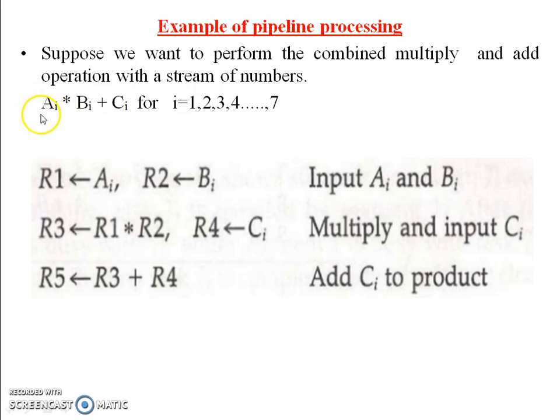Ai is the first input stored in register 1 (R1). Bi is the second input stored in register 2 (R2). First, we perform multiplication using R1 * R2, which is stored in register 3 (R3). Next, input Ci is stored in R4. Then the addition of these two registers, R3 and R4, stores the result in R5.